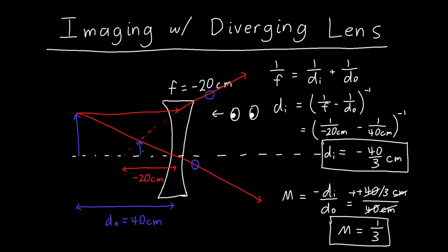So this is our image and it's called a virtual image. It's virtual because it's only apparent - the rays never actually intersect each other, they just look like they're leaving from that location.